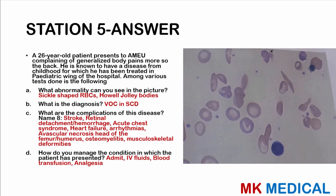Here comes the answer. Most likely these are sickle-shaped red blood cells — especially this one over here. We can also see bluish material in the cytoplasm of these red blood cells — these are actually nuclei of red blood cells, referred to as Howell-Jolly bodies. This man has a vaso-occlusive crisis in a sickle cell disease patient.